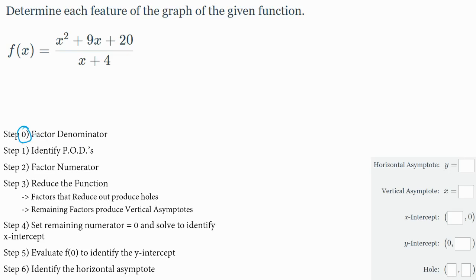So we're starting off with Step 0, factor the denominator. It's done for us. It's in factored form. There's no factoring to do. Point of discontinuity, you would set x plus 4 equal to 0 and solve, and you get x can't be negative 4. Negative 4 would cause this to be 0, and I can't divide by 0.